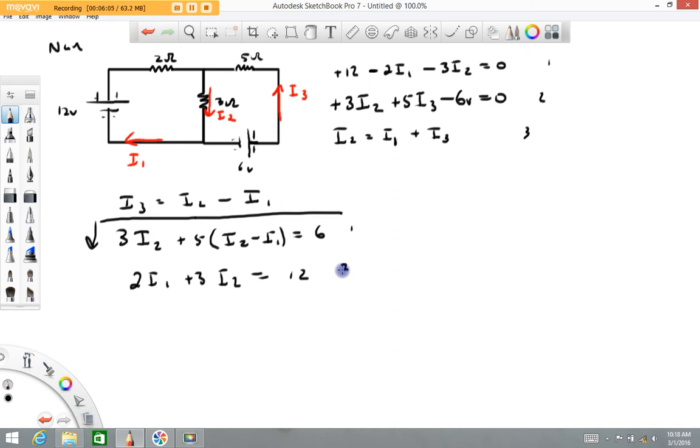I'm going to rewrite equation one. We're going to have a minus 5I1 from this product. I2 terms we have 3I2 and plus 5I2, that's going to be plus 8I2, equals 6. This equation I think I'm just going to rewrite it just the way it is: 2I1 plus 3I2 equals 12. This now, from here down, this is going to be my new system of equations.